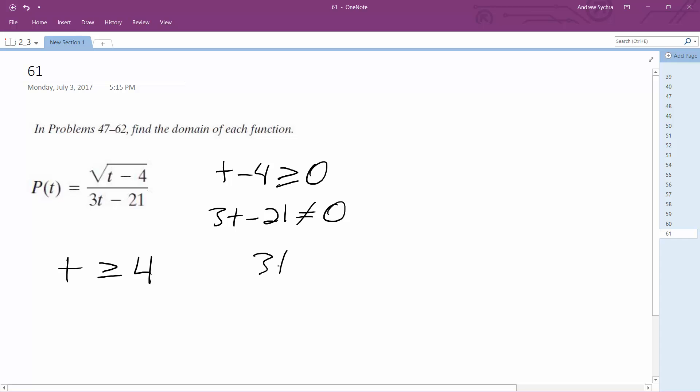For the denominator, 3t minus 21 is equal to 0, so 3t is equal to 21. When you add it to the other side and divide by 3, t cannot equal 7 on the bottom.